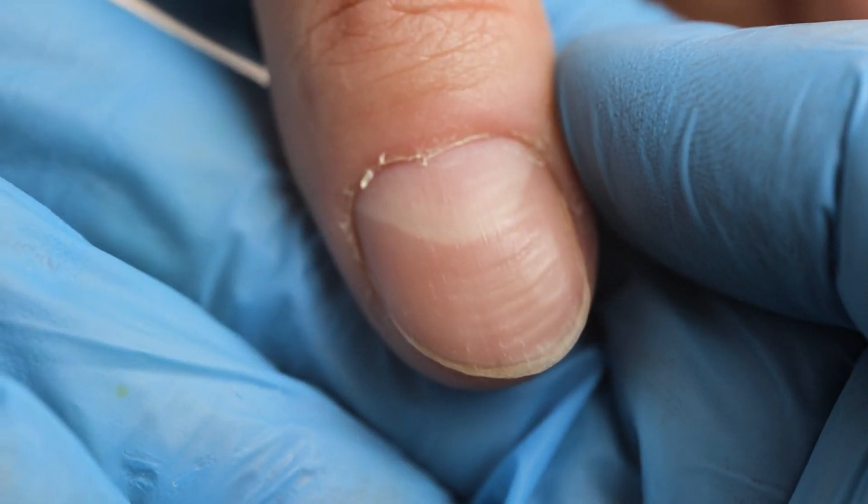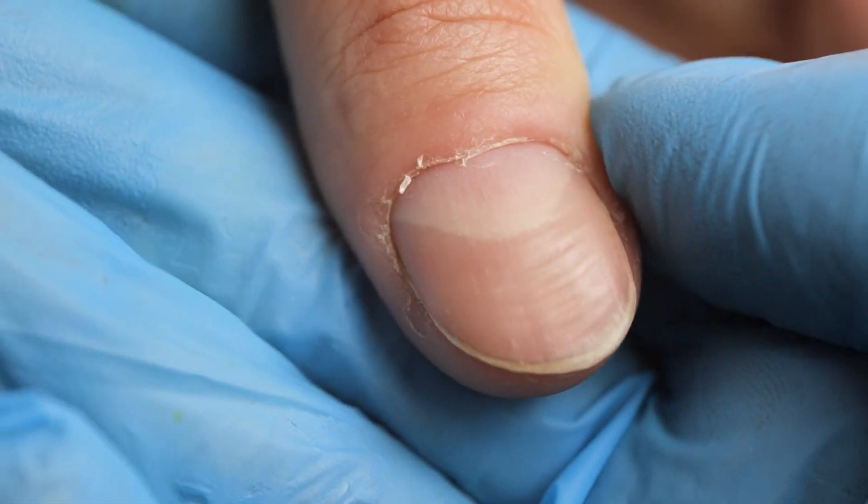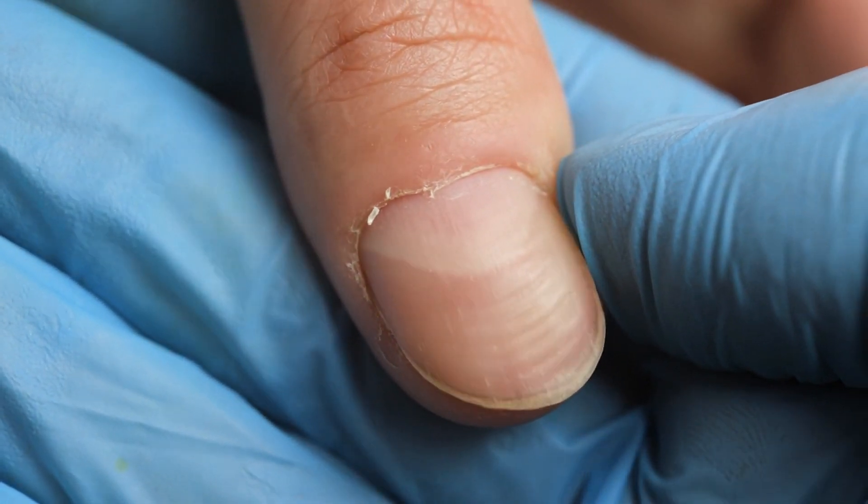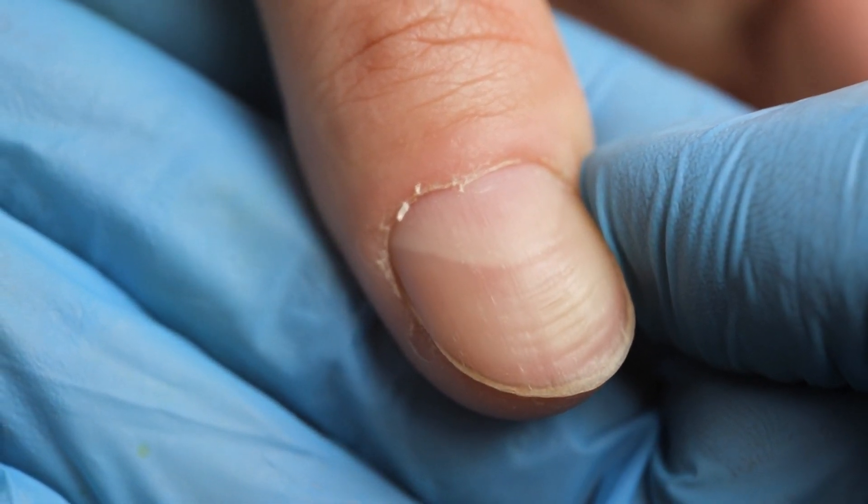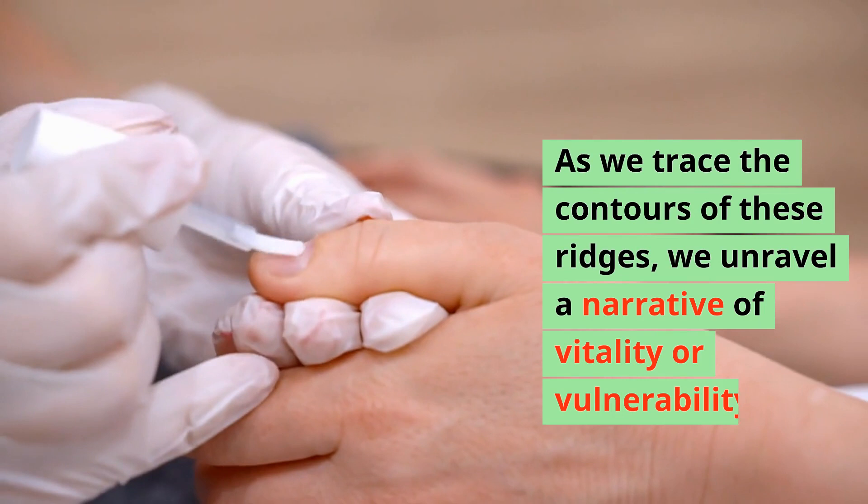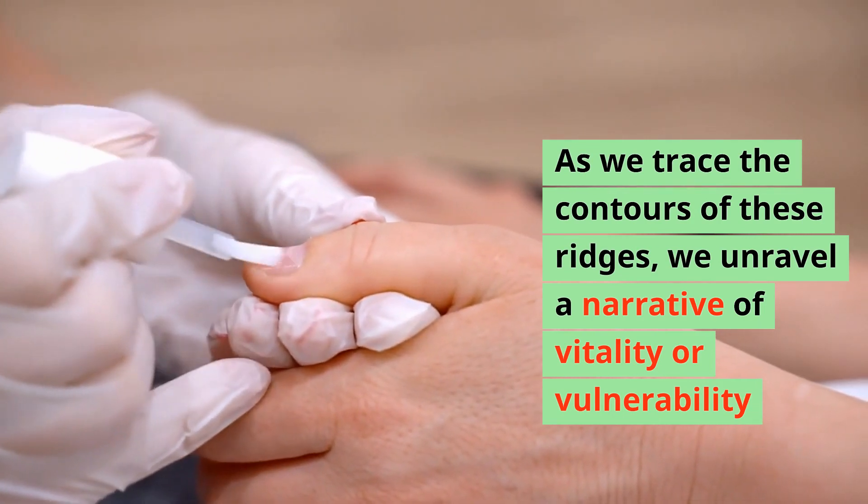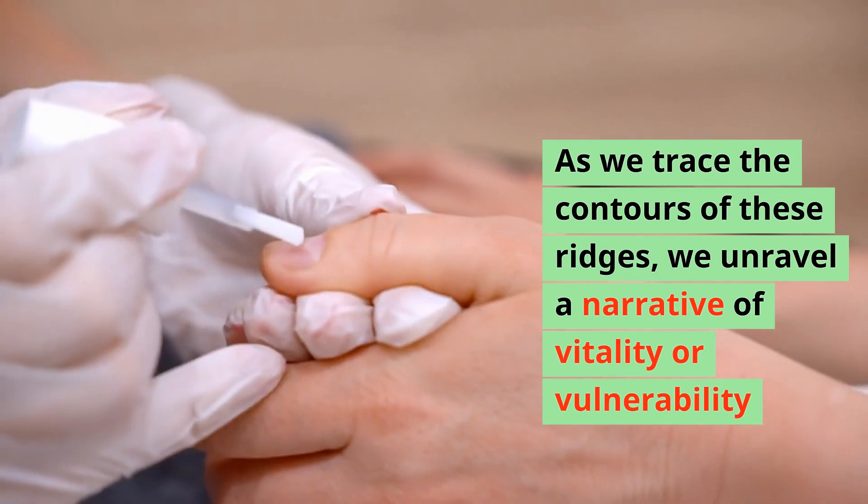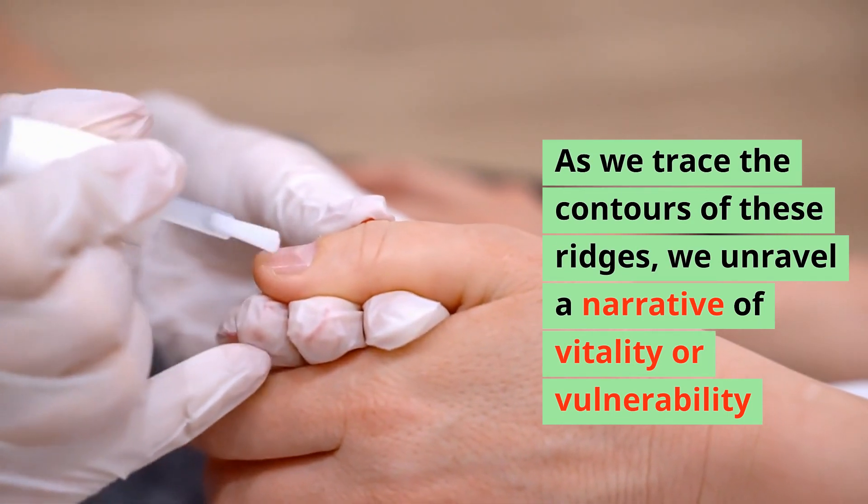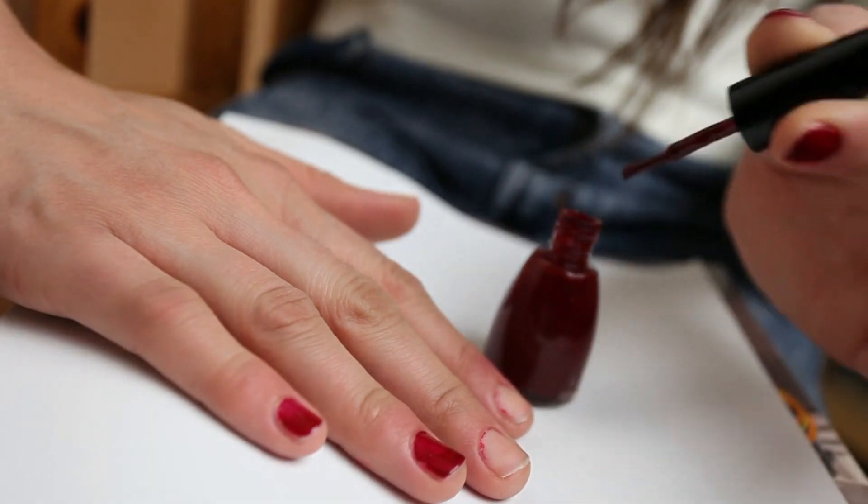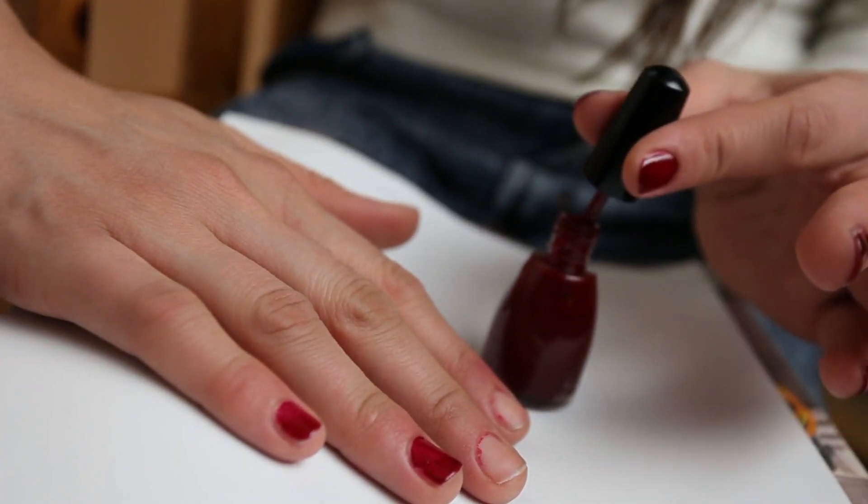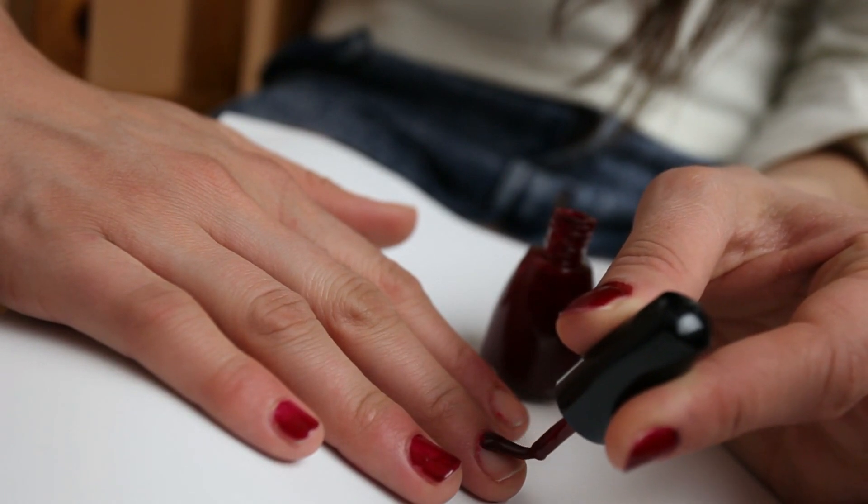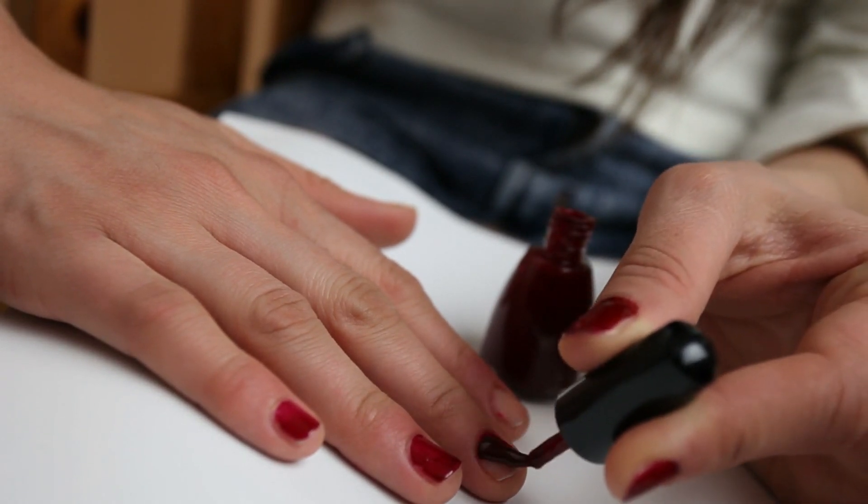These subtle ridges, traversing steadfastly from cuticle to tip, stand as silent witnesses to our body's inner symphony, hinting at disruptions within its harmonious melody. As we trace the contours of these ridges, we unravel a narrative of vitality or vulnerability. Within the delicate lines etched upon our nails lies a roadmap to self-discovery and healing, beckoning us to delve deeper into the enigmatic depths of our being.